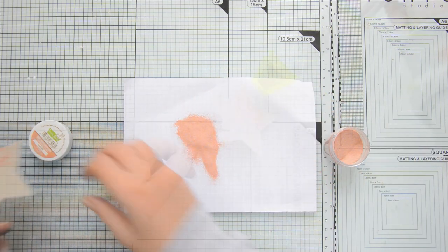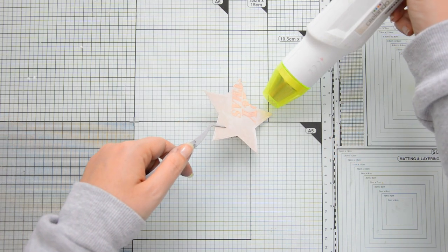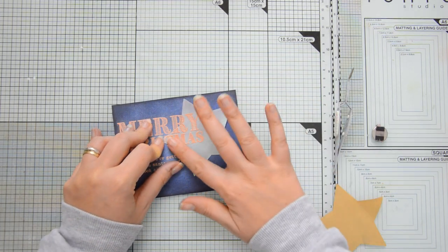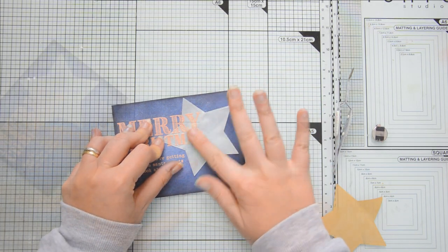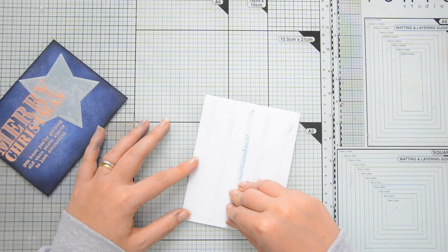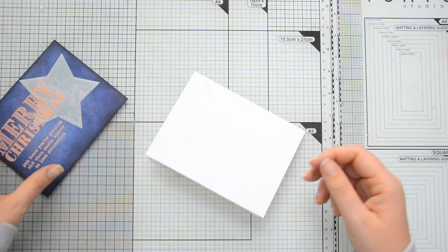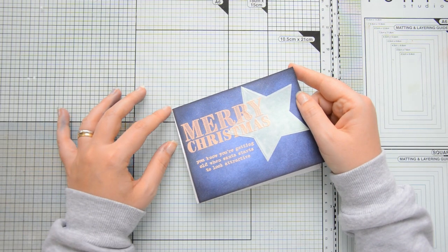You want to make sure that your heat gun is nice and hot at this stage because you want to apply heat to your vellum for as short a time as possible and then the next step is to adhere the star so that the sentiment is continuous on the card front.